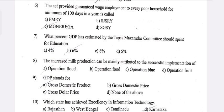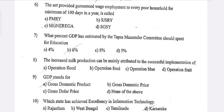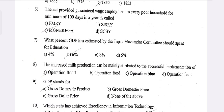Sixth question: The Act that provided guaranteed wage employment to every poor household for a minimum of 100 days in a year is called — option C, MNREGA.